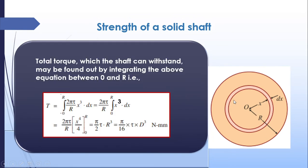Integrating from 0 to R gives the total torque as T = (pi / 16) · tau · d³, where d is the diameter of the circle and tau is the maximum shear stress. This is the maximum strength the solid shaft can withstand.